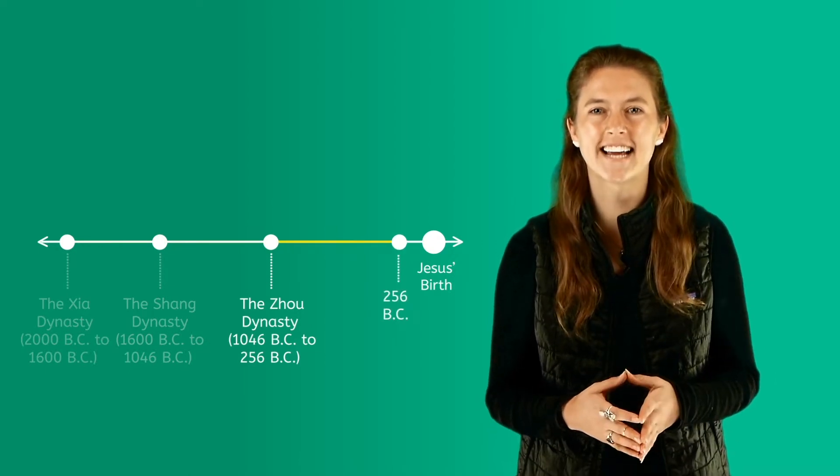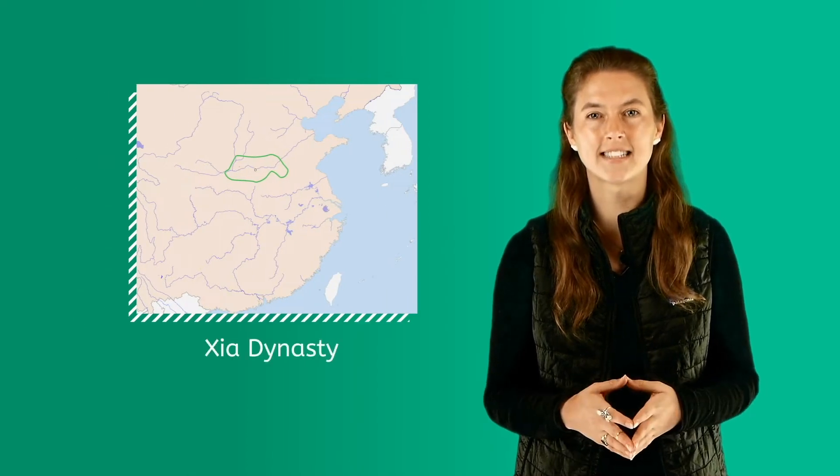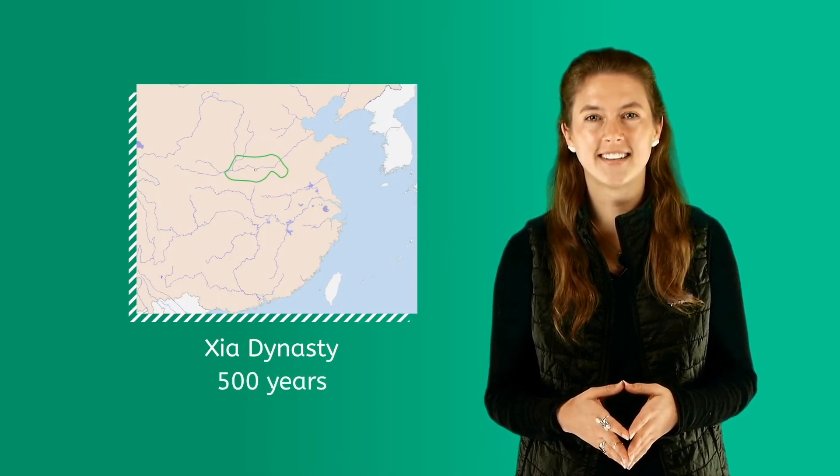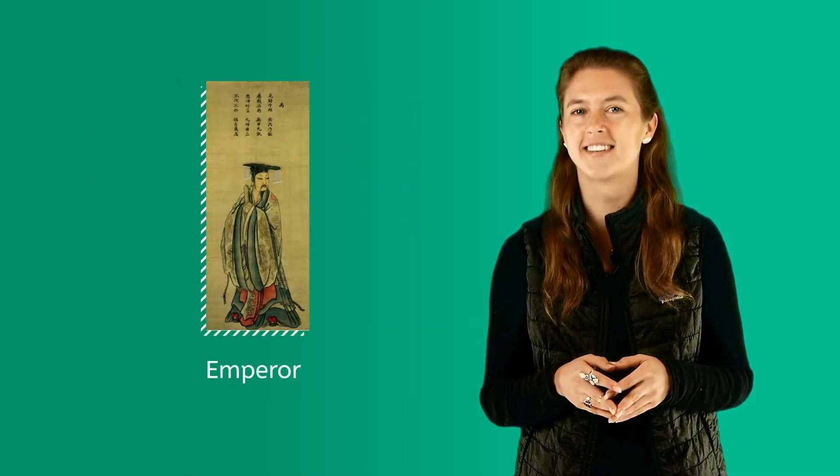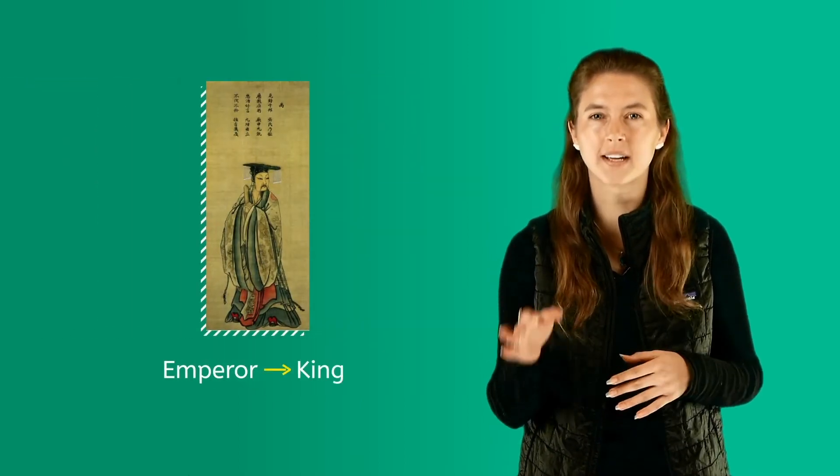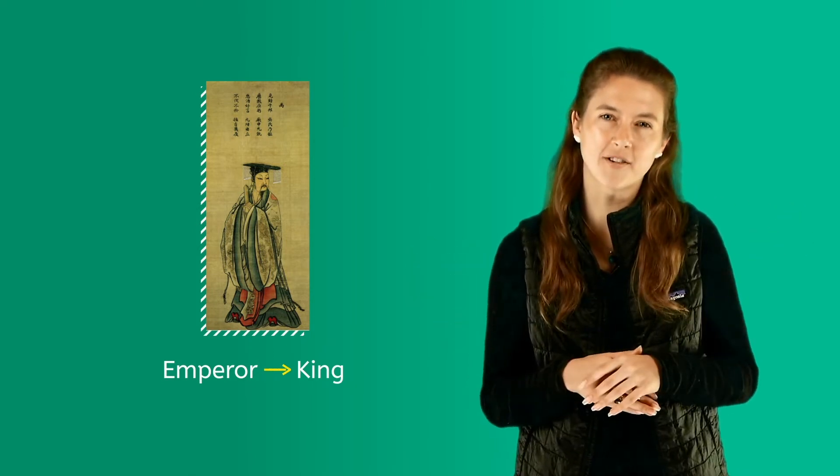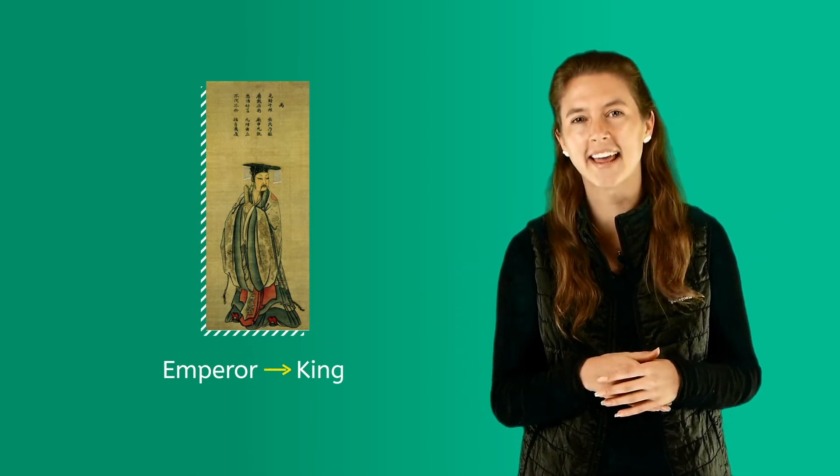The first ancient Chinese dynasty was the Xia dynasty, which lasted about 500 years. During this time, ancient China had 17 emperors. An emperor is similar to a king. They ruled over all parts of the government, the people, the army, and the land.